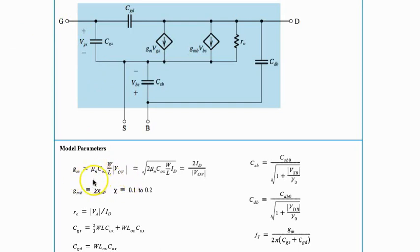This is the formula I was talking about for the transconductance: mu_n C_ox W/L times the mod of V_ov, which equals the square root of 2 mu_n C_ox W/L times I_D.